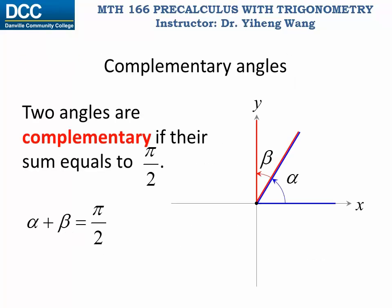If two angles added together equal π/2, which is 90 degrees as we are more familiar with, then these two angles are known as complementary angles.